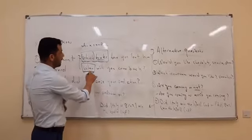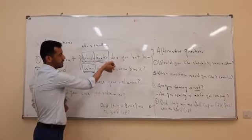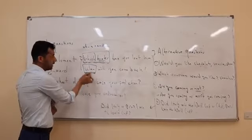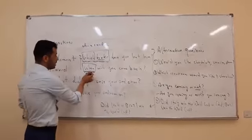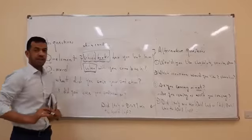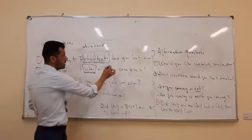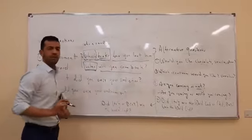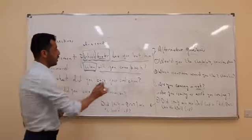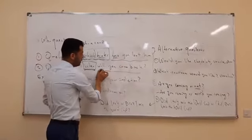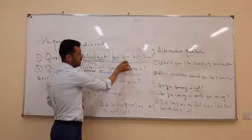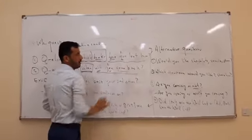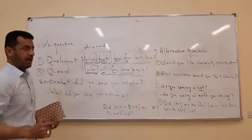In both cases, the Q element occurs initially in the sentence. While the Q word, if it is present, also occurs initially within the Q element. The rest of the question follows the rule of yes-no questions. This means that the operator will occur before the subject and then the complement of the sentence, and so on.